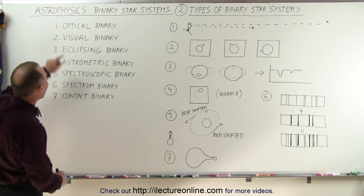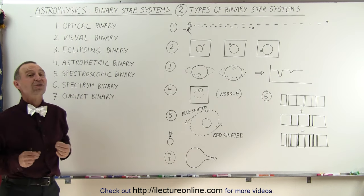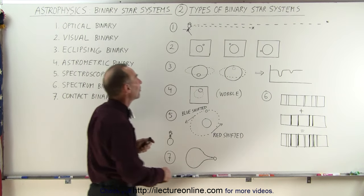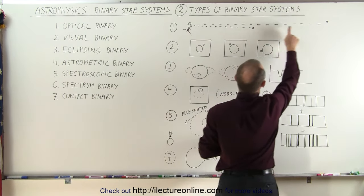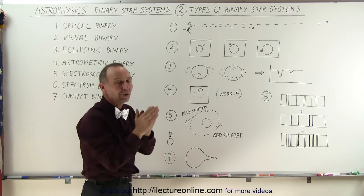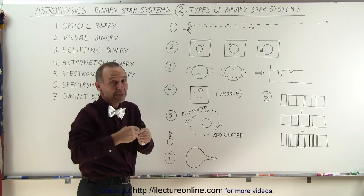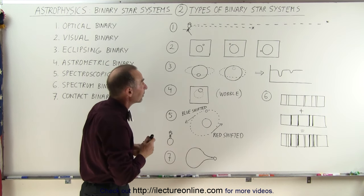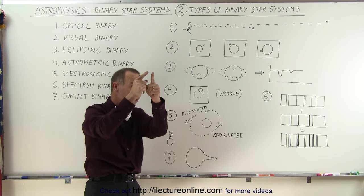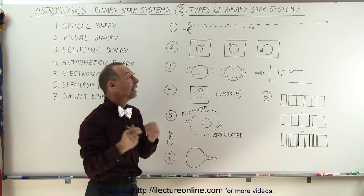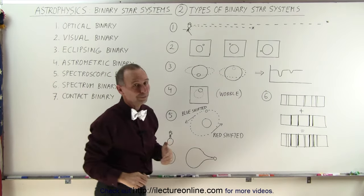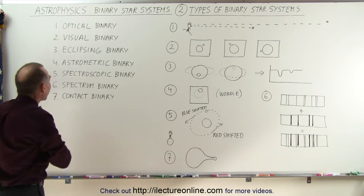Optical binaries are not really binary star systems. They just appear to be a binary star system because from our vantage point two stars may be very close together. The angle between them may be absolutely minute, perhaps fractions of an arc second, so they appear to be a binary star system when in essence they're very far apart. We call them optical binaries.